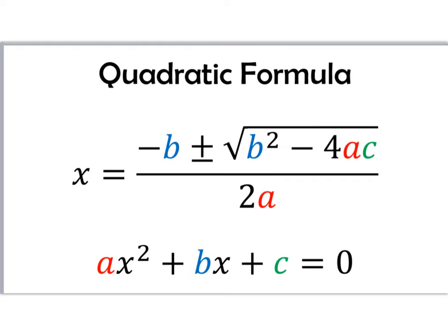The quadratic formula uses the a, b, and c that we've been talking about in the past in the standard form of the quadratic formula to find the value of x, which we also called the roots and the x-intercepts and the solutions. And you'll notice that the a value, which is the number in front of x squared, is going to show up twice. The b value is going to show up twice, and the c is going to show up one time as we do this.